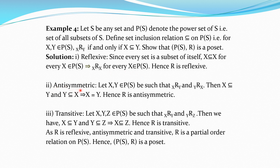For antisymmetry, we consider X, Y in P(S) such that X is related to Y and Y is related to X. By definition of the relation, X ⊆ Y and Y ⊆ X, which implies X = Y. Hence R is antisymmetric. For transitivity, we consider three members X, Y, Z of P(S) such that X is related to Y and Y is related to Z. Then X ⊆ Y and Y ⊆ Z implies X ⊆ Z, hence X is related to Z. The relation is transitive.